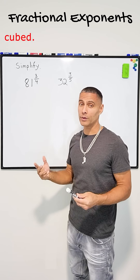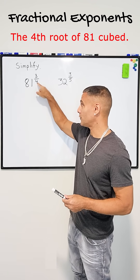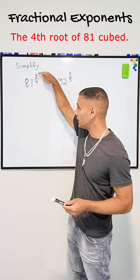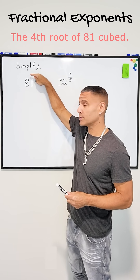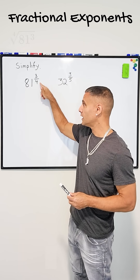Kind of like when you have a square root and a cubic root — well, in this case we have a fourth root. The numerator is the exponent that you're raising the number to, and the denominator is the root.